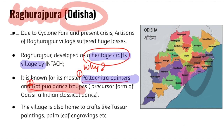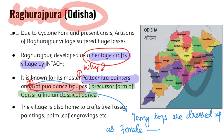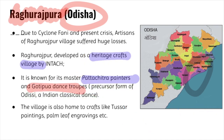Gotipua dance is a precursor form of Odissi dance, one of India's classical dances. In Gotipua, young boys are dressed as females to praise Lord Jagannath. Raghurajpur was in news because, being a heritage craft village, last year due to Cyclone Fani and this year due to the ongoing crisis, the artisans of this village suffered huge losses.